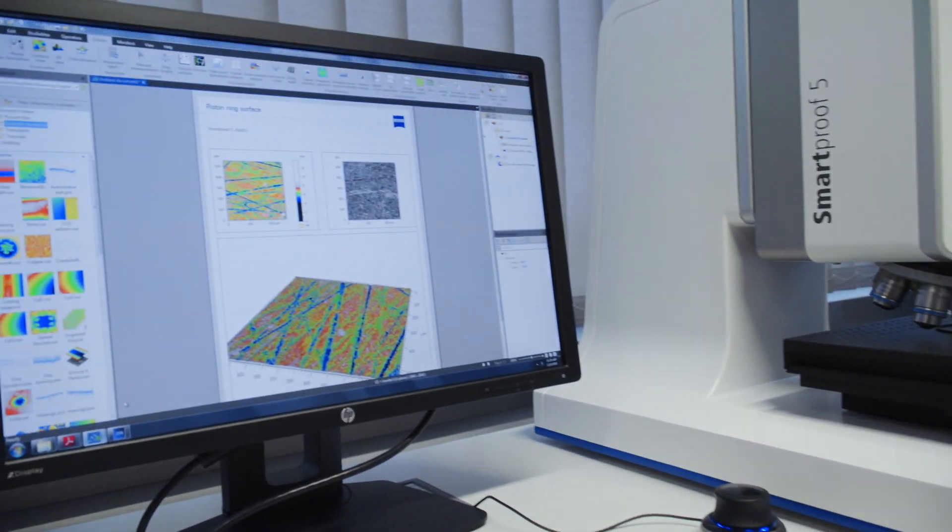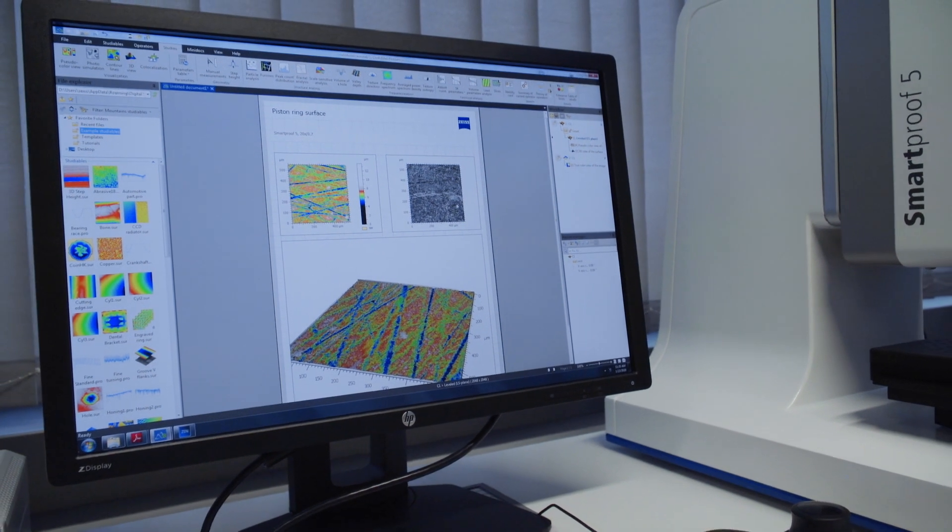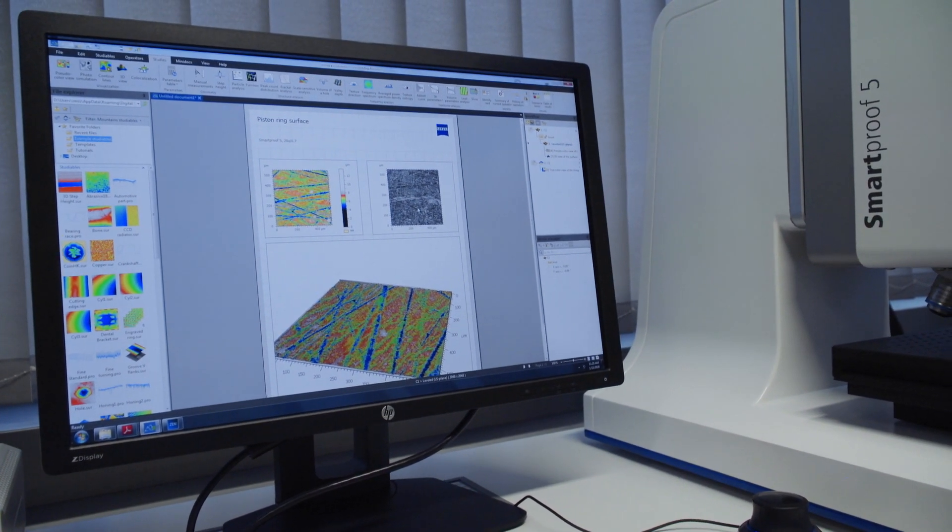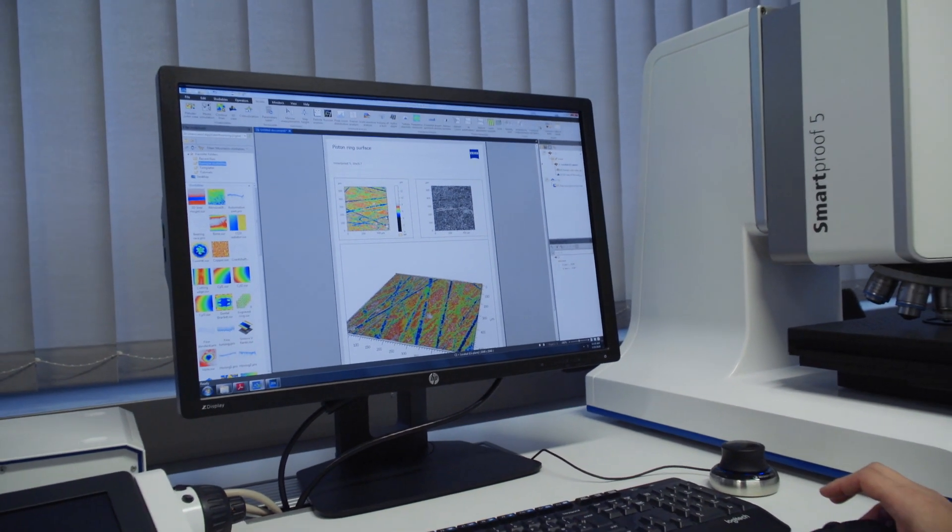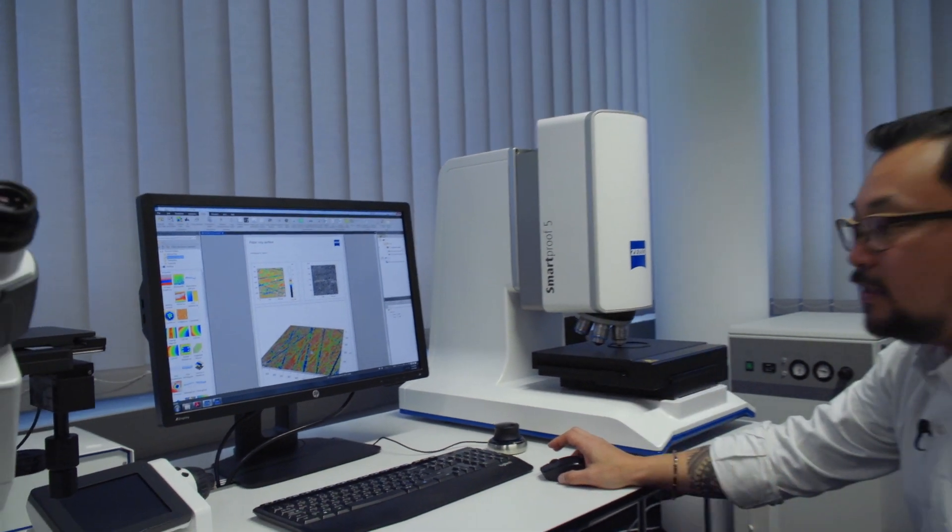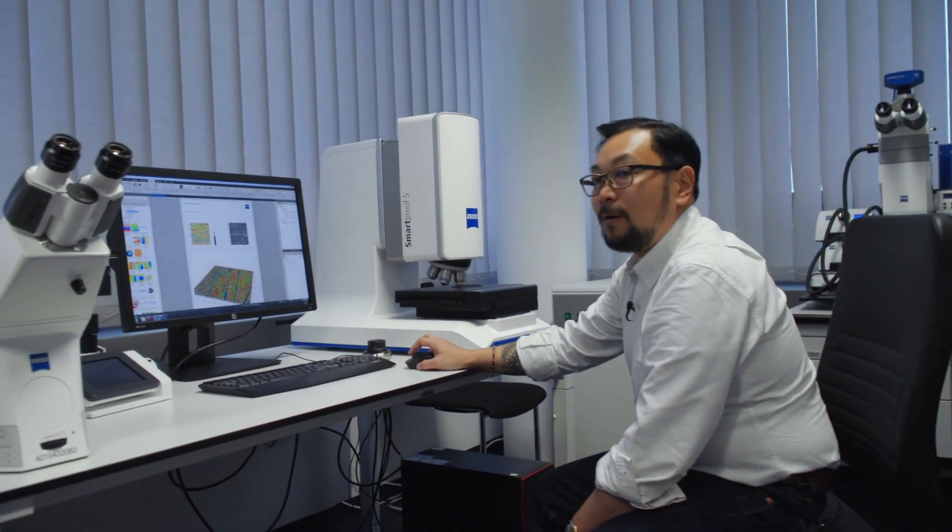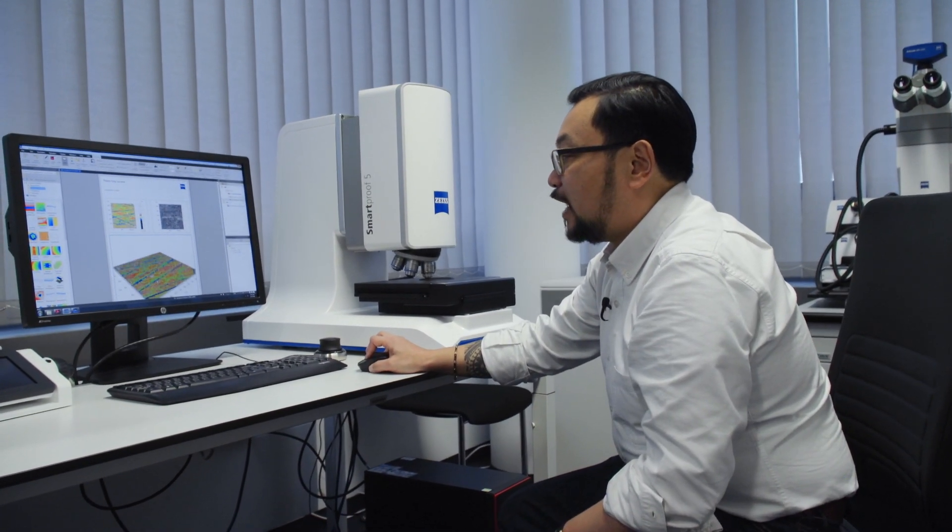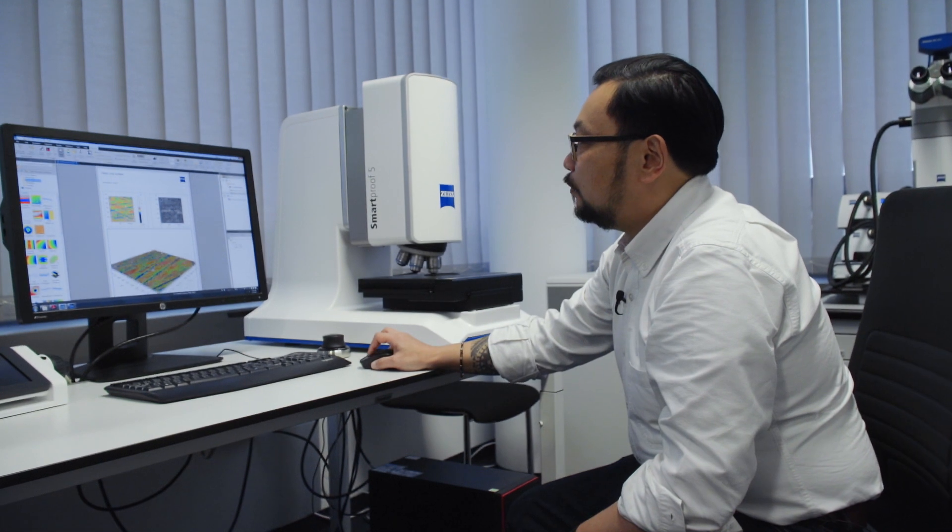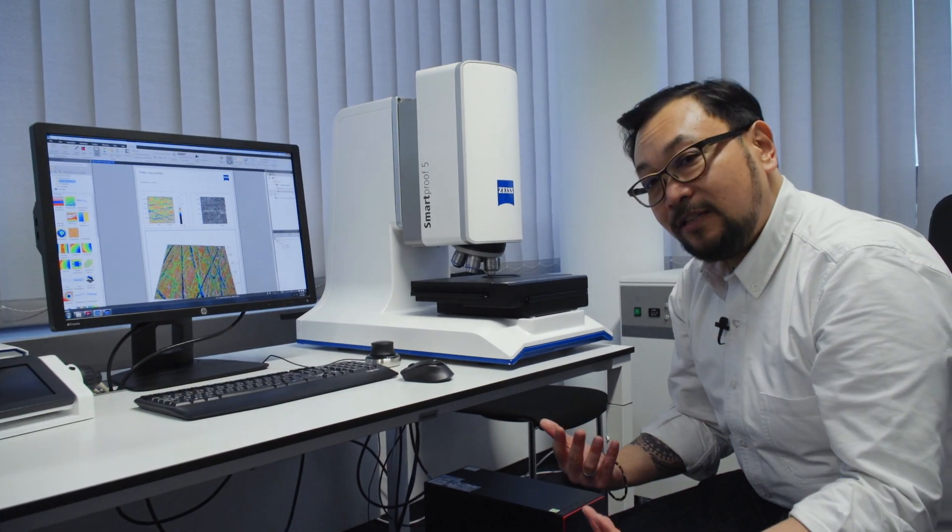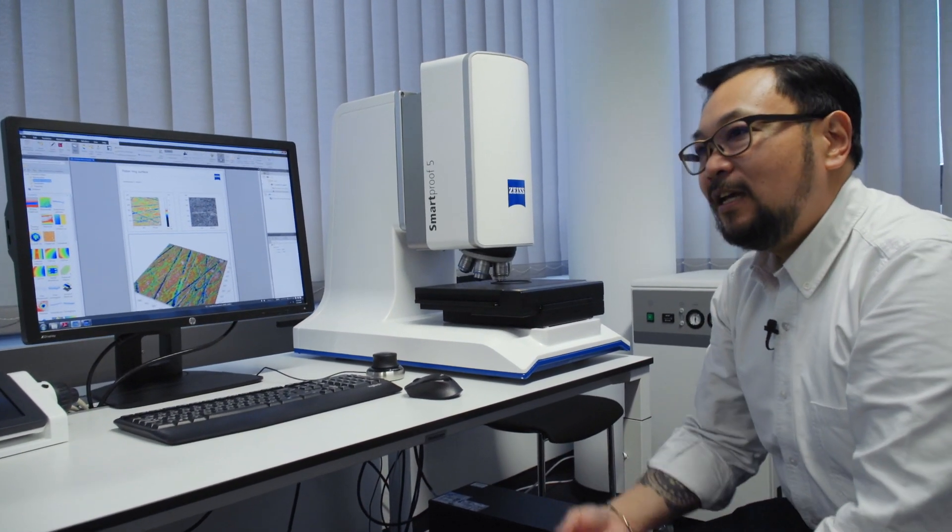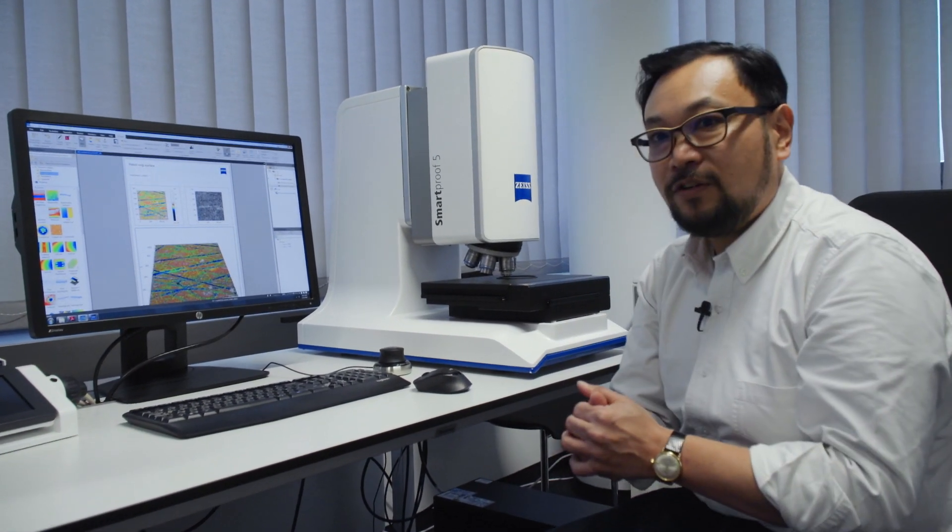So here we can see we have this surface texture image in black and white and then what we've done is we've color mapped it based on peaks and valleys so you can get a very interesting representation of that using color. Down here we have a fully isometric view that we can have a look around. We can even automate it in the report.